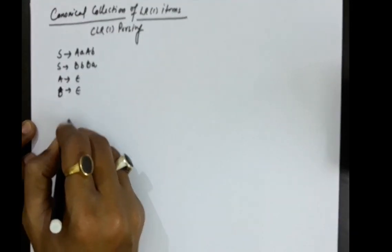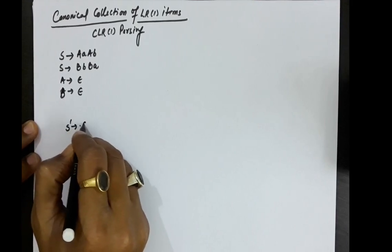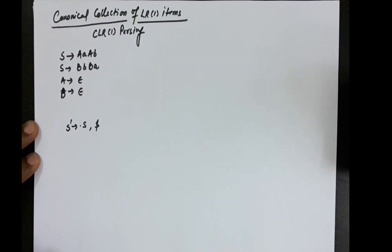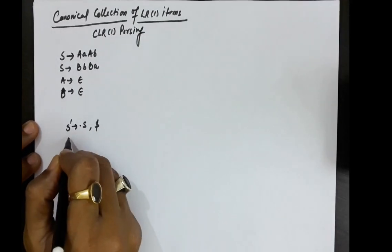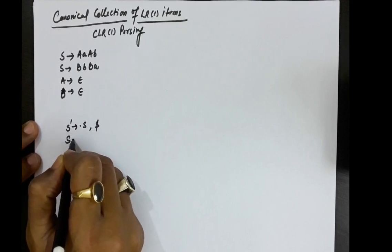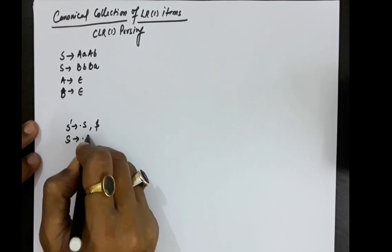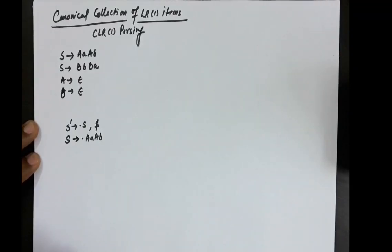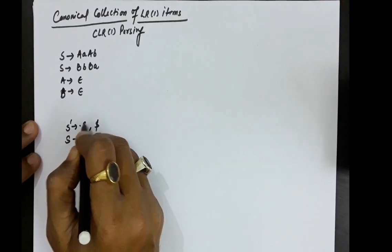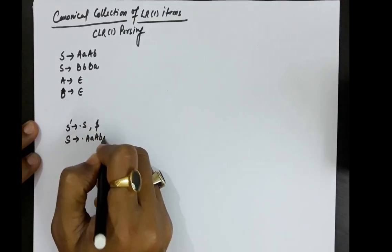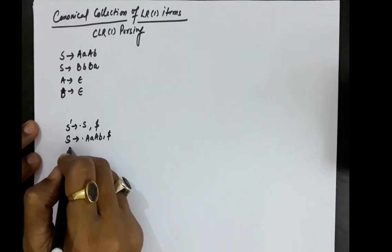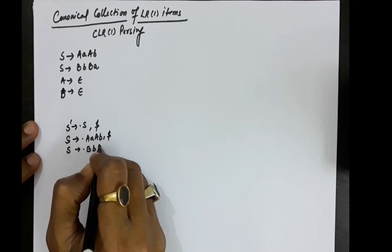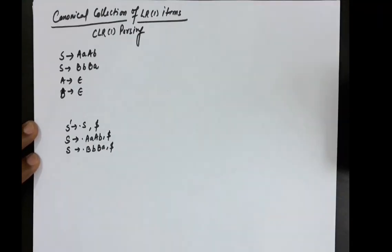Let us write the augmented grammar. So S' produces dot S with dollar as a lookahead, since dollar will be the lookahead for the start symbol. Now for all productions starting with capital S: S produces dot A small a small b, and since this is written because of S, the first of dollar will be the lookahead. Similarly for the second production, S produces dot B small b capital B small a, with dollar as the lookahead.